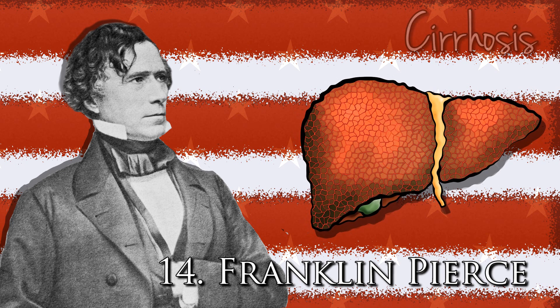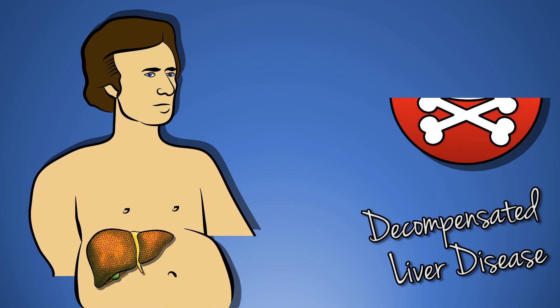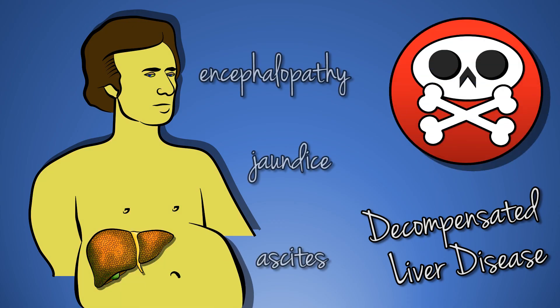This week we're right back in it with America's 14th president, Franklin Pierce. There really is no way around it — Franklin Pierce drank himself to death. After struggling with alcoholism for much of his adult life, Pierce developed cirrhosis, that's chronic liver damage secondary to the alcohol toxin. He likely died from decompensated liver failure as the toxic products normally metabolised by the liver built up in his body and poisoned him. This is not just a historic cause of death — alcohol today kills over 2.5 million people worldwide.